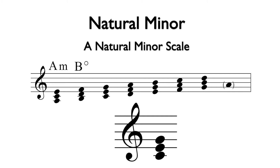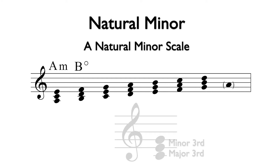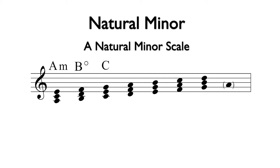For the next triad, we have C to E as a major third, and E to G as a minor third. Therefore, this is a C major triad. If we continue up the scale using the formulas for triads, we will determine that the fourth chord is D minor, the fifth chord is E minor, the sixth chord is F major, and the seventh chord is G major. This returns us back to A minor, a chord that we do not have to rewrite since it is the same as the first chord.